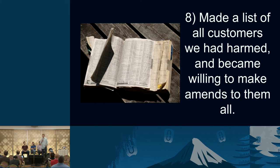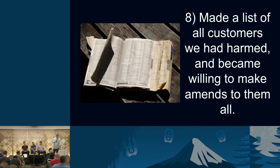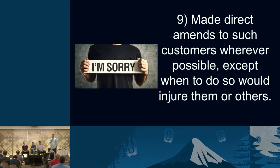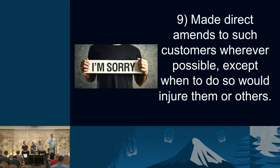The eighth item is we make a list of all of our customers we have harmed and be willing to make amends to them all. Sometimes that list can get kind of big when things don't go well — that's a phone book. If Neutron doesn't work, if Rabbit goes poorly, that's the list of customers right there. We make direct amends to our customers wherever possible, except when to do so would harm them, their VMs, their tenant networking, their storage, or any other thing that can go wrong and usually does.